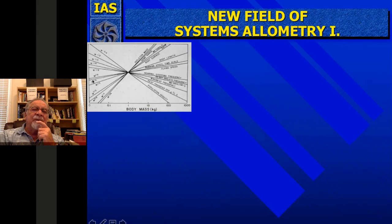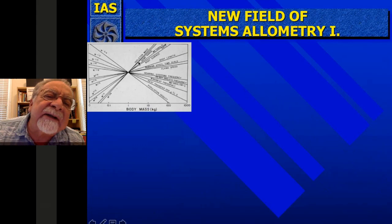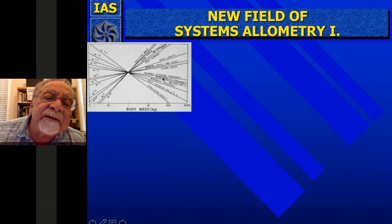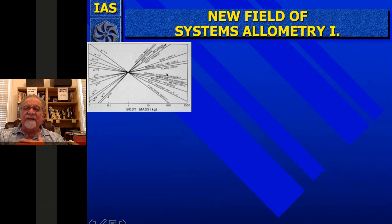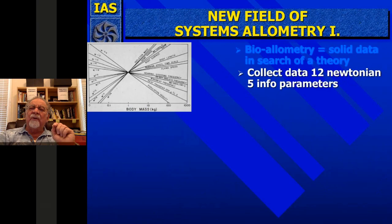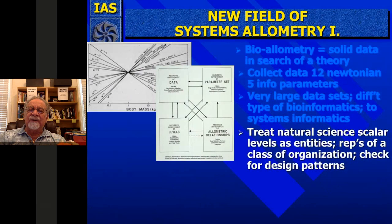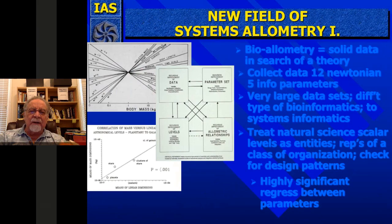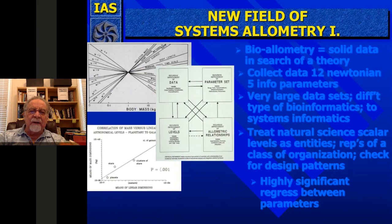In bio-allometry there are many relationships between everything: skeleton mass, home range, body surface, body length, population density, heat transfer per gram, hearing, stepping frequency, heart rate, and the mass of an individual. This has been shown extensively for bio-allometry. But bio-allometry is often shown as data very good in search of a theory. We collected these Newtonian and information parameters and looked at very large data sets to try to see on the systems level — not just the biological level — are there allometries expressible in log terms?